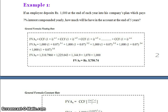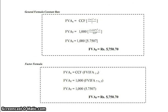Applying the second formula — the constant rate formula — to verify: FVA(5) = 1000 × [(1+0.07)^5 − 1] / 0.07. Simplifying the bracket gives 5.7507. Multiplying by 1000, FVA(5) = ₹5,750.70, which is the same answer.